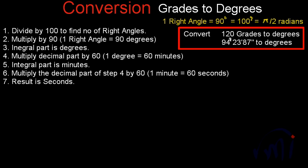Hi, in this video we are going to learn how to convert grades into degrees. We have to remember only one thing: we need to convert the grades into right angles first. The relation to remember is one right angle is equal to 90 degrees, which is equal to 100 grades, and which is also equal to pi by 2 radians.